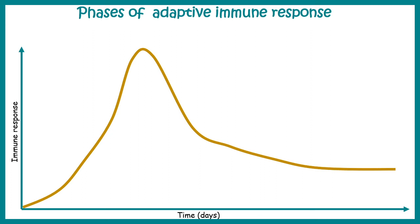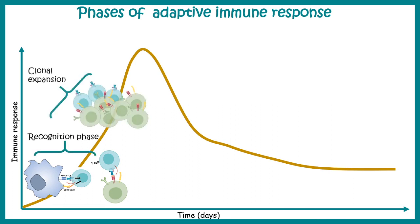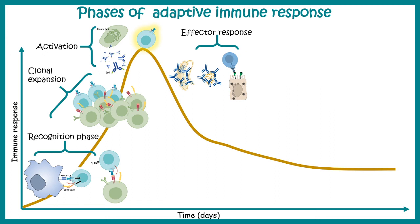Now let's look at the overall time course of the adaptive immune response phase by phase. The first phase is activation of adaptive immune components — T cells activated by antigen-presenting cells, and B cells activated by T cells or independently. This is followed by a recognition phase, then clonal expansion, then an activation phase where T cells and B cells differentiate into plasma cells. Finally, the effector response begins — either humoral or cell-mediated — which directly fights the pathogen.